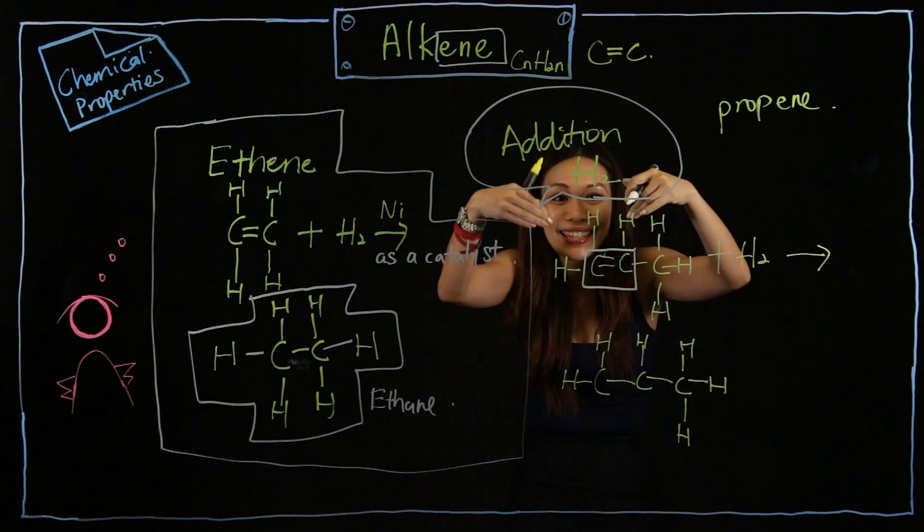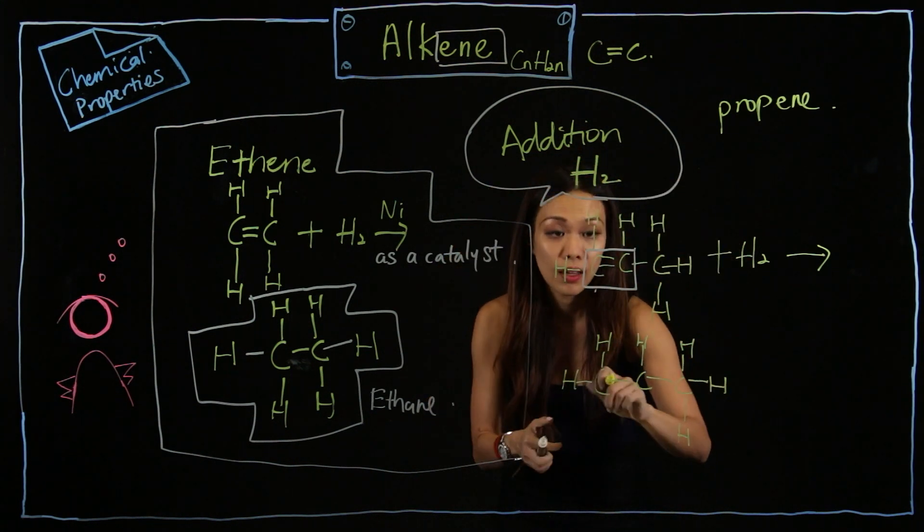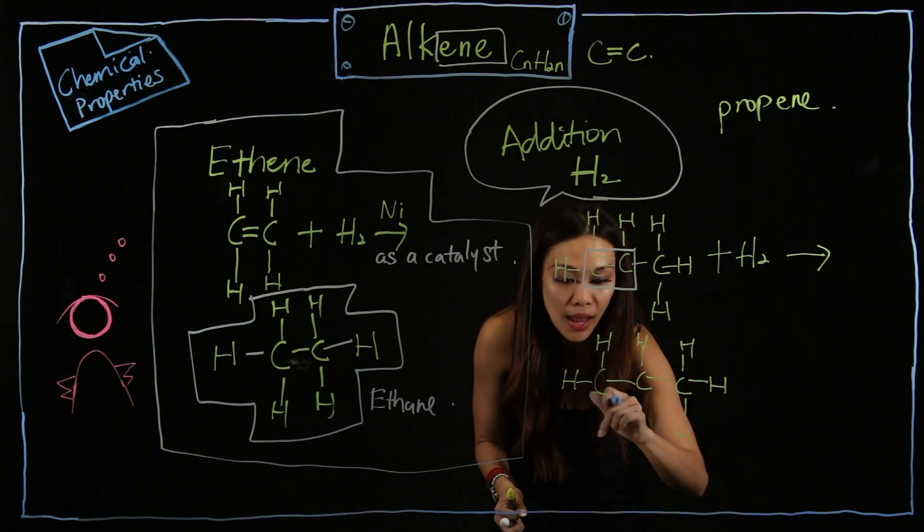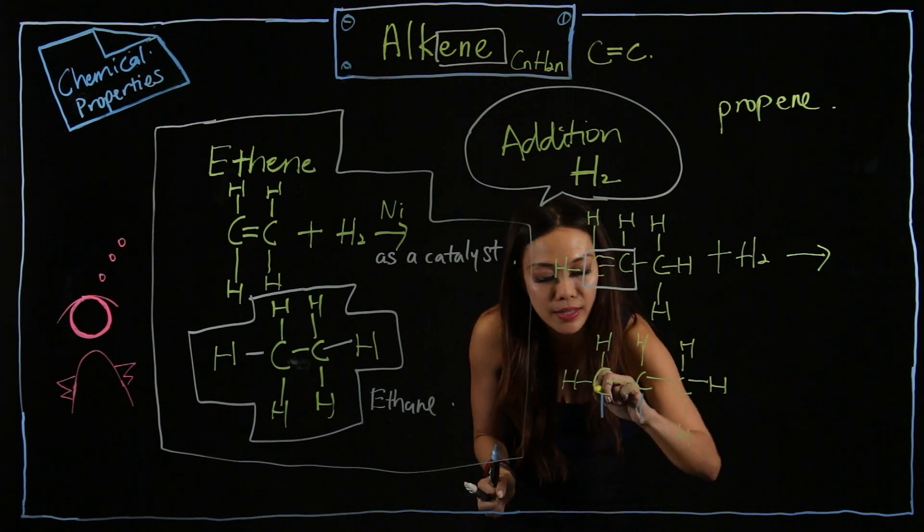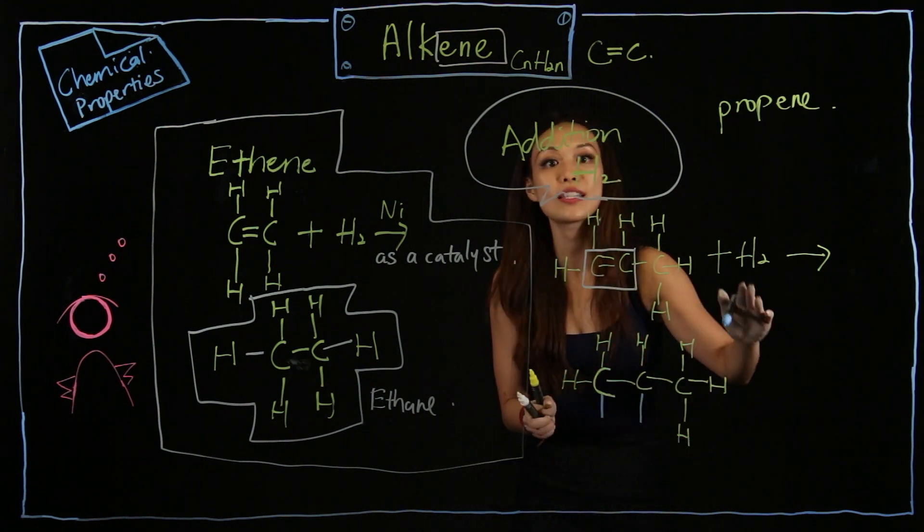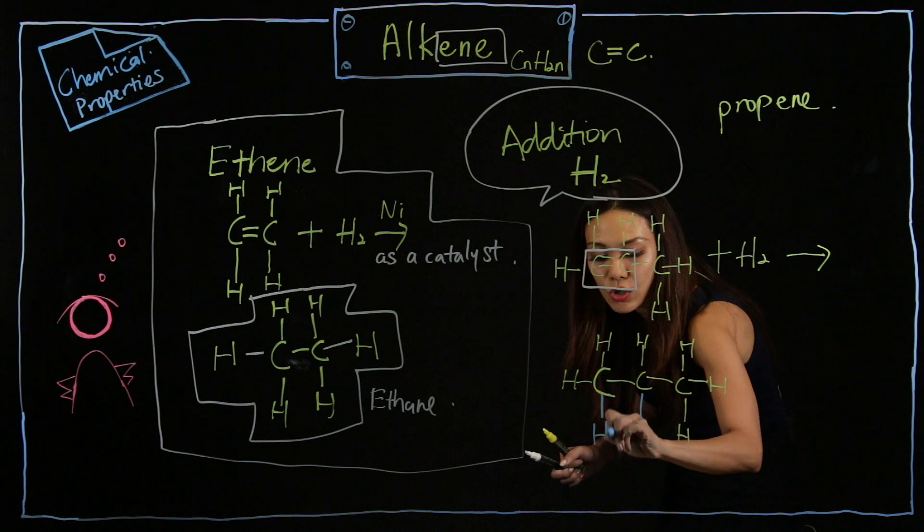So I will extend downwards the two lines. Okay, let me thicken this C so you can see clearer. And because it's addition, I just need to add H and H.